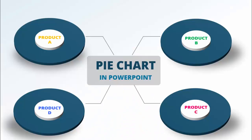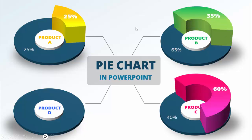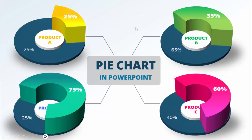In today's tutorial I'm going to show you how to create a pie chart in PowerPoint. I have created these platforms for four products. When I click it will show me the percentage of Product A, which is 25 percent. When I click it will show me Product B percentage, 35 percent, 60 percent, and 75 percent.